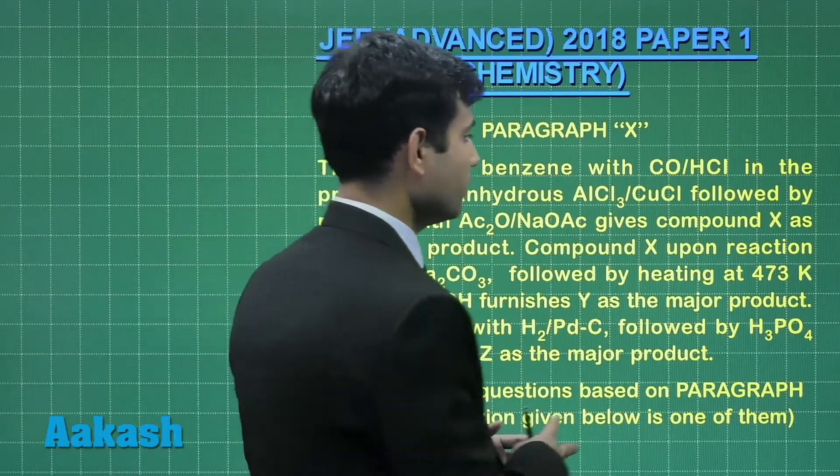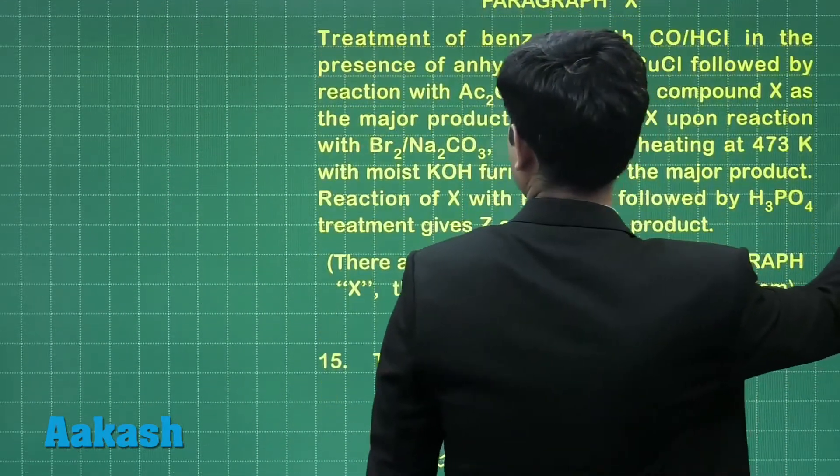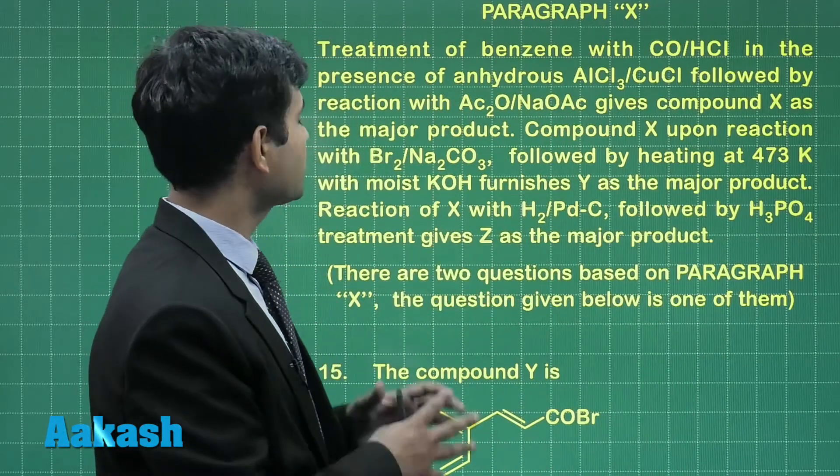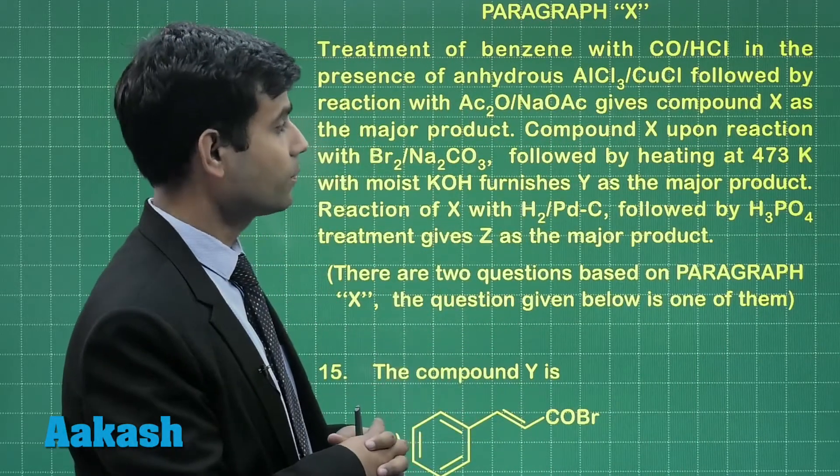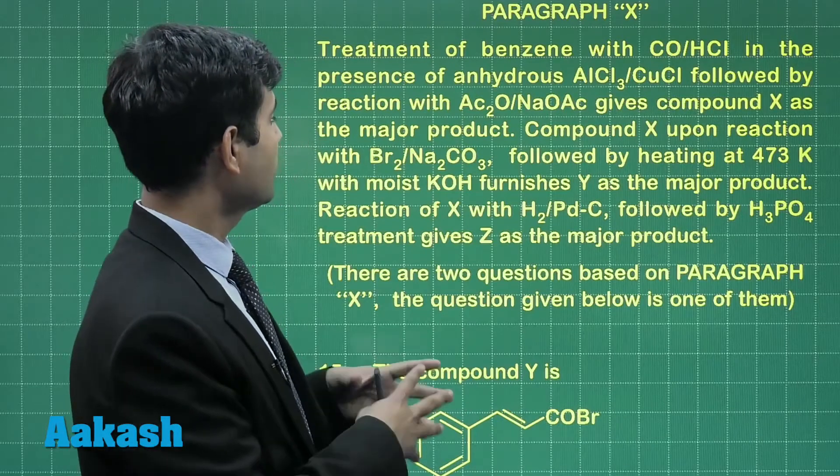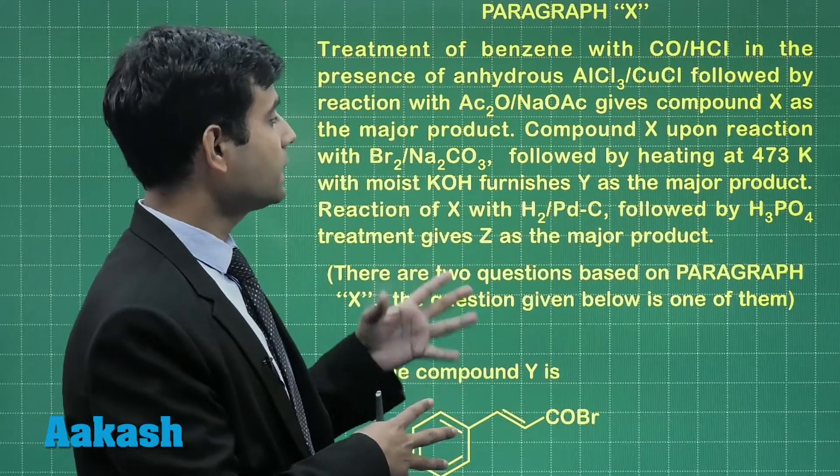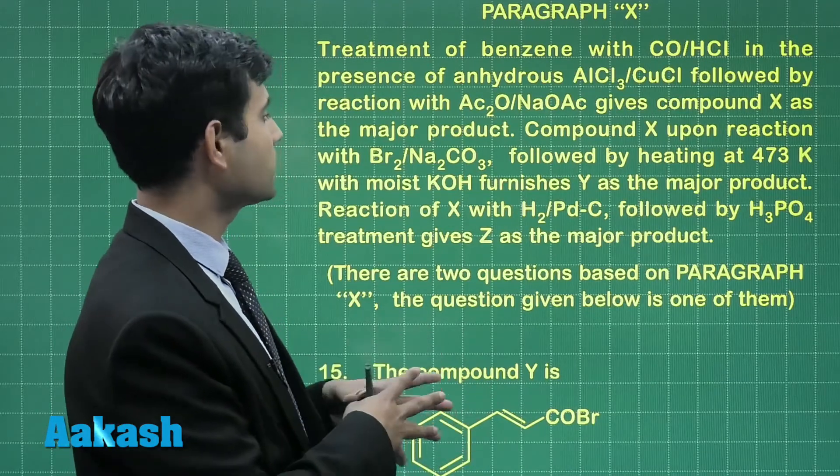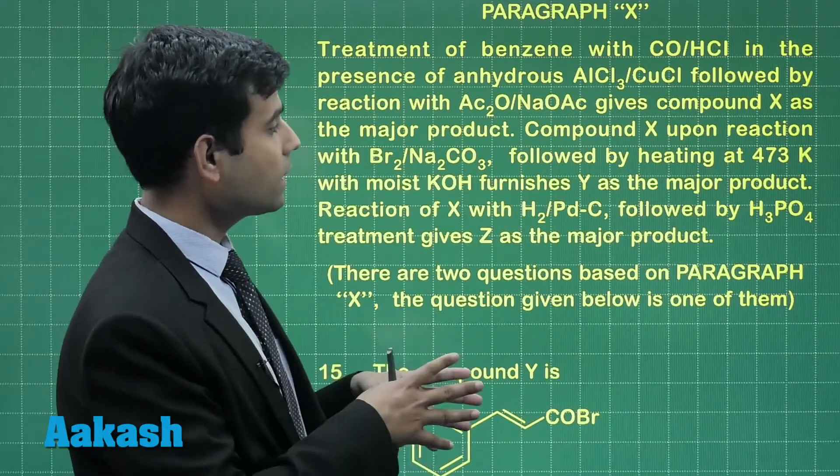Let us go through the paragraph. Treatment of benzene with CO/HCl in the presence of anhydrous AlCl3/CuCl followed by reaction with acetic anhydride and sodium acetate gives compound X as the major product. Compound X upon reaction with Br2/Na2CO3...